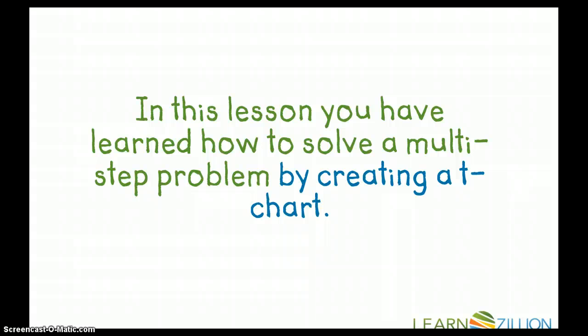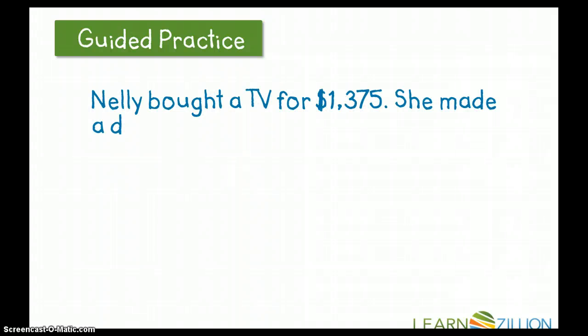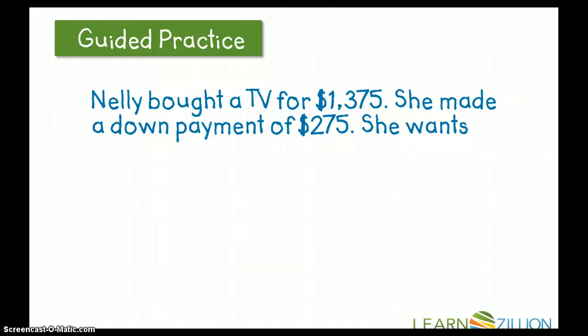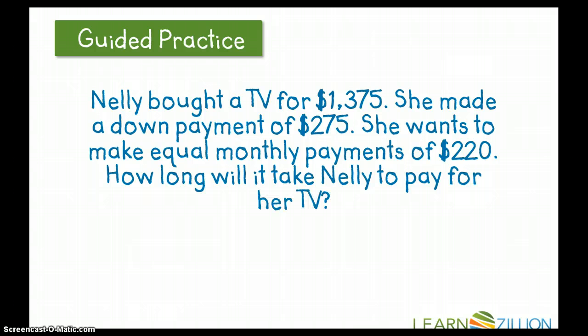In this lesson, you have learned how to solve a multi-step problem by creating a T-chart. Let's take a look at some guided practice. Here's Nellie again and she's buying another TV. This time it's a cheaper TV for $1,375. She made a down payment of $275 and she wants to make equal monthly payments of $220. How long will it take Nellie to pay for her TV? Remember to highlight the important information and then create a T-chart to help you solve this problem. Remember, you can always go back in the video if you get stuck.